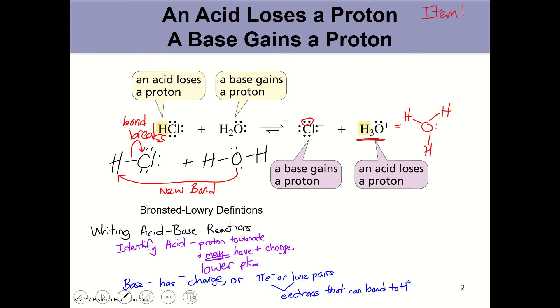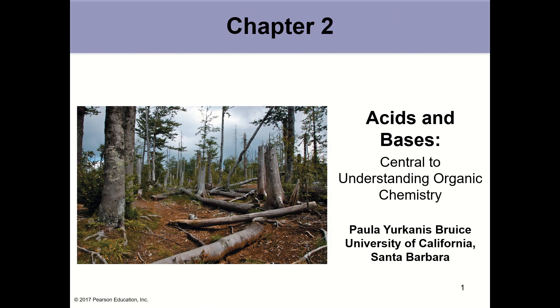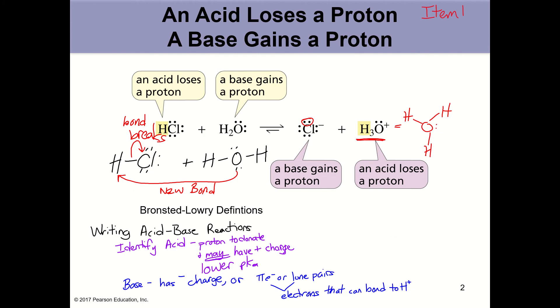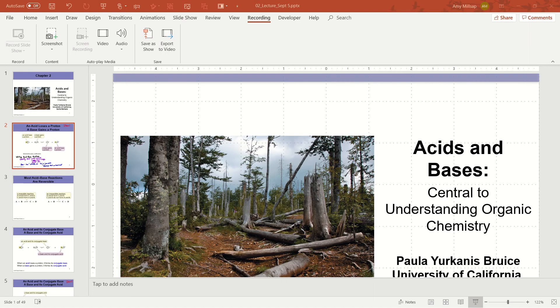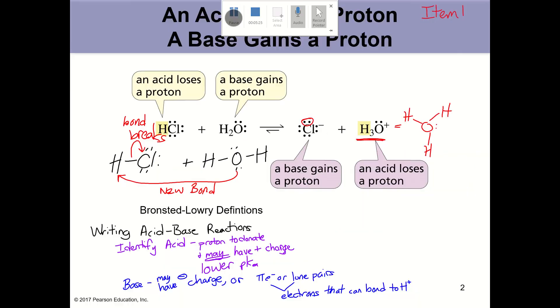Now, the base, when we try to identify the base, it should have a negative charge. It doesn't have to have a negative charge, I apologize. So a base may have a negative charge. And it will have either pi electrons or lone pairs.